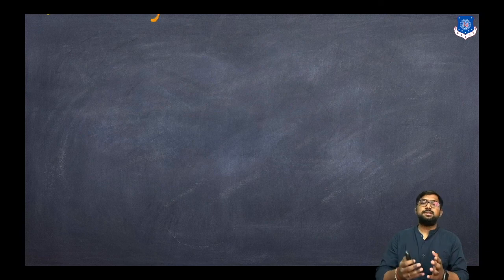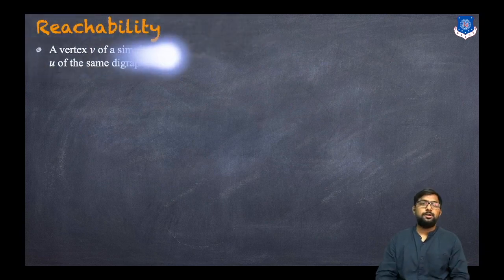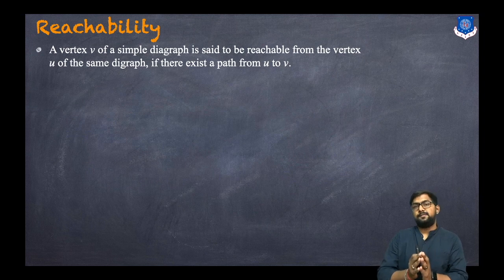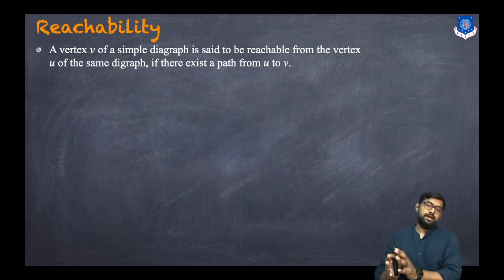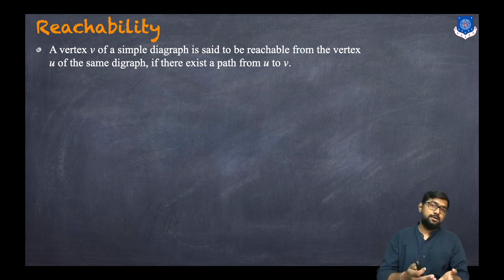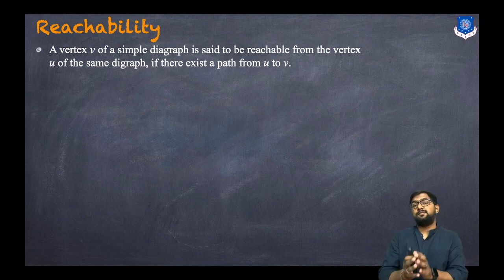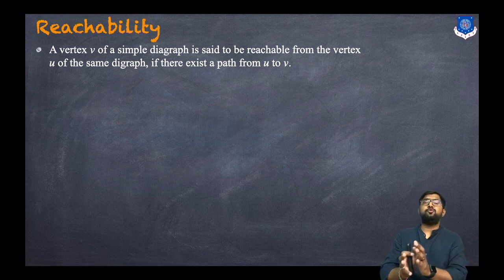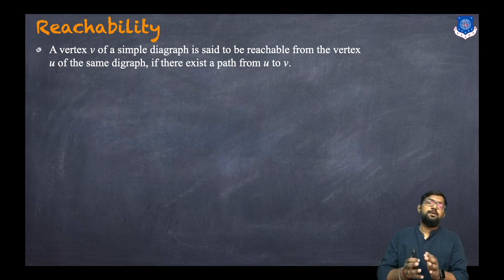First, let us understand what is reachability. A vertex V of a simple digraph is said to be reachable from the vertex U of the same digraph. Simple means there is no self-loop and no parallel edges, and digraph means we have directions. So V is reachable from U if there exists a path from U to V.